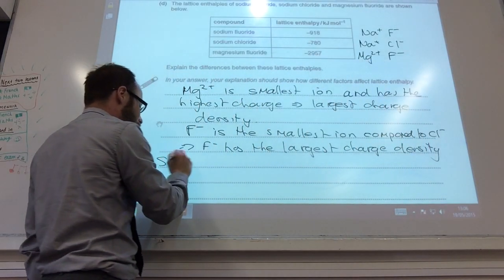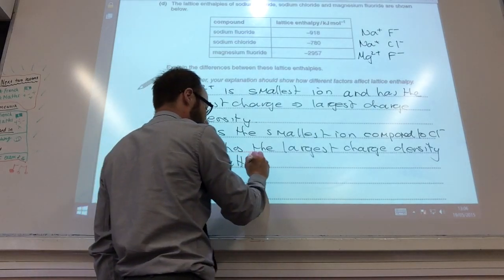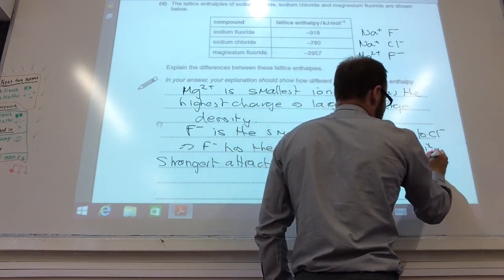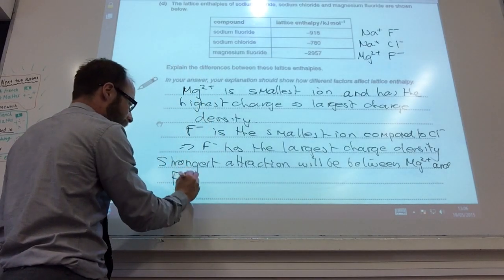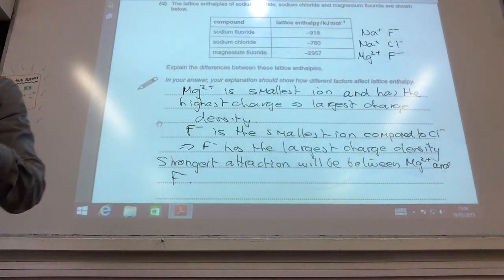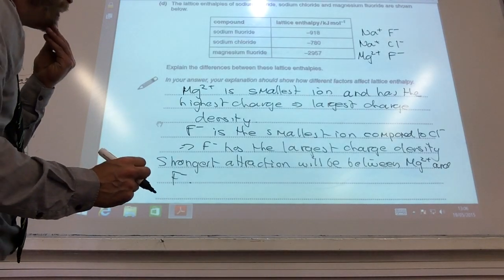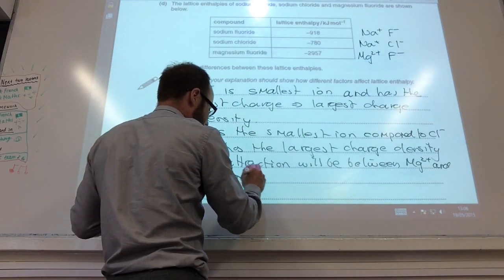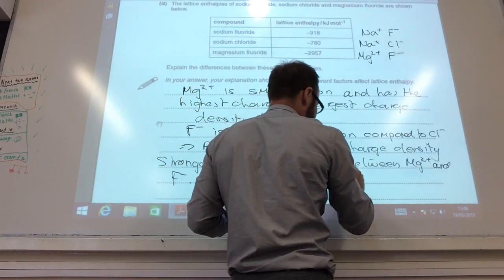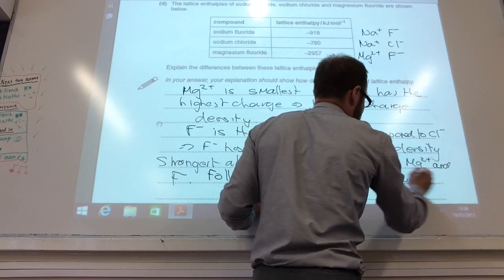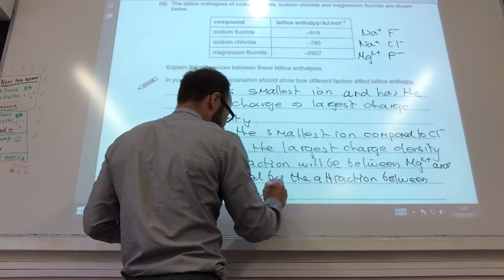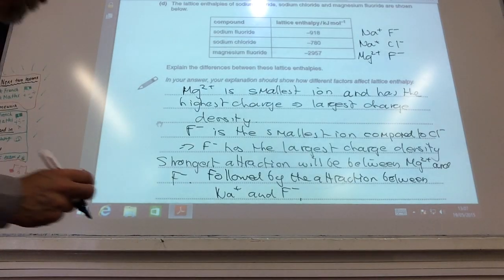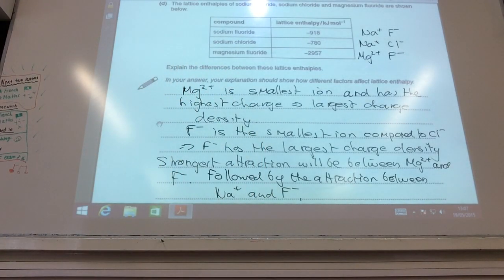And so the strongest attraction will be between Mg2+ and F- ions, and that means that's why you've got the most exothermic lattice enthalpy there. Should also mention that the second strongest attraction is between Na+ and F-, and you can see that from the lattice enthalpy being the second most exothermic because it has the strongest attraction after magnesium fluoride.